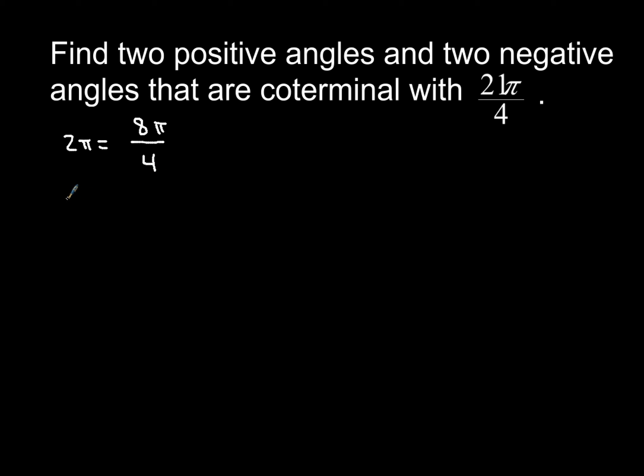So, all right, here we go. So if we have 21π over 4, and we add to that 8π over 4, we end up with a grand total of 29π over 4. So that's one coterminal angle. That is definitely positive. And if we add another 8π over 4 to that, positive coterminal angle to 21π over 4 would be 37π over 4. So I found two positive ones.